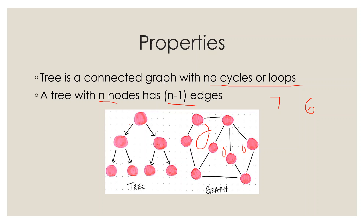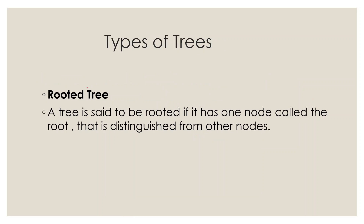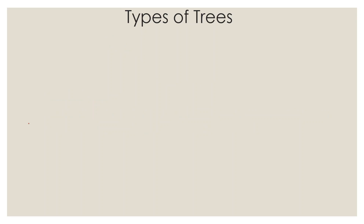Now let's look at the types of trees. The first type is the rooted tree. A tree is said to be rooted if it has one node called the root that is distinguished from all other nodes. In a rooted tree, we can distinguish the root node from all other nodes.